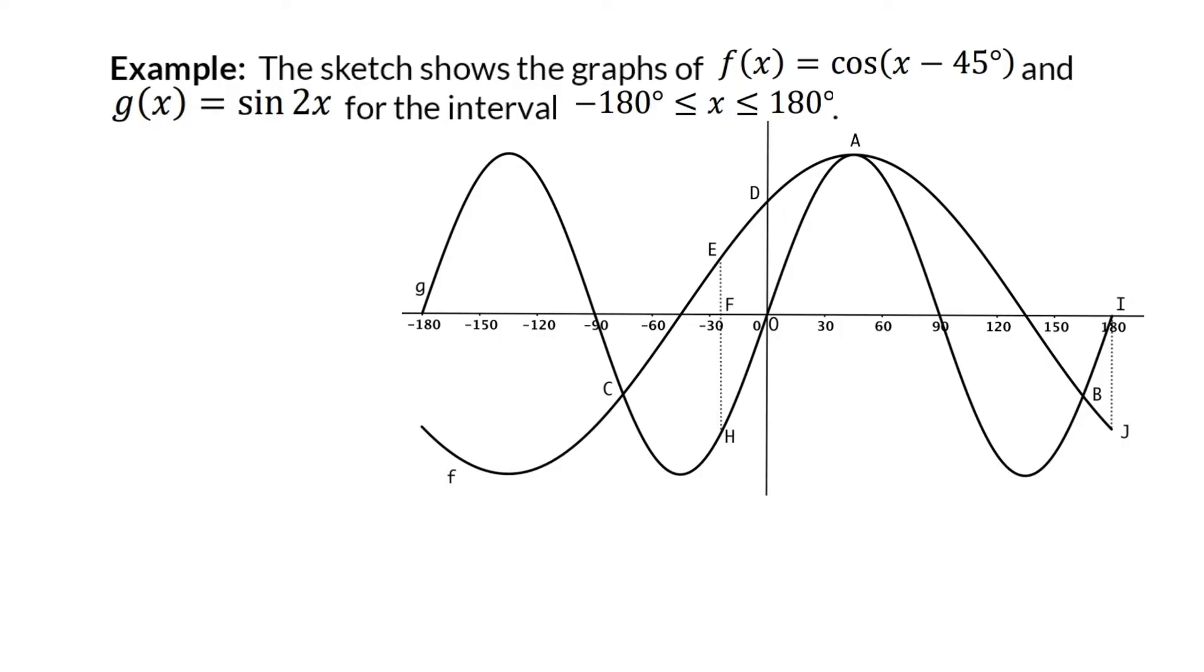Before you start with the questions, you identify all the information that was given. Here, two graphs with their complete equations were given, and the first one is graph f. From the equation of f given, it is clear that only one transformation has been applied to the original cos graph, and that is a shift in the positive direction with 45 degrees.